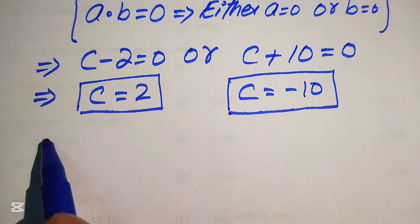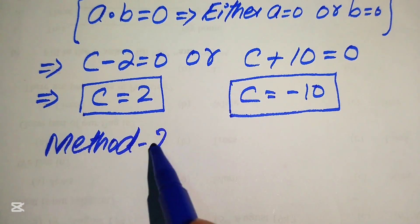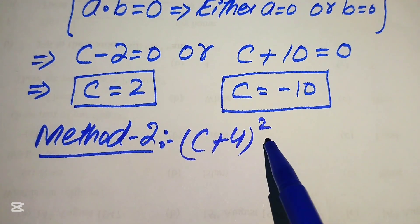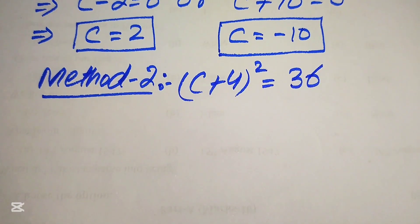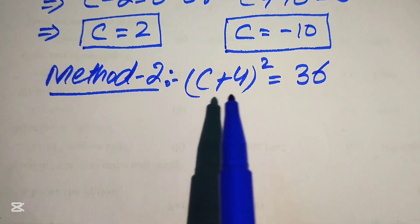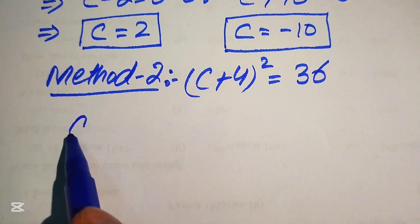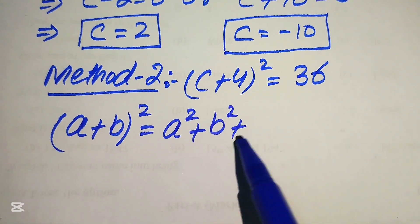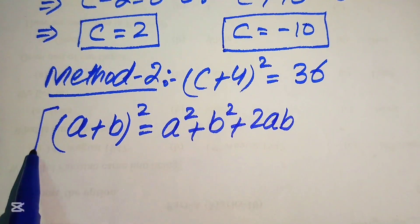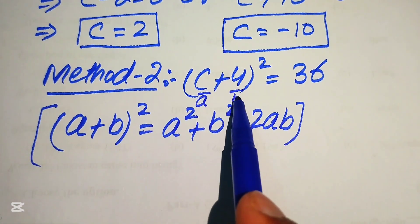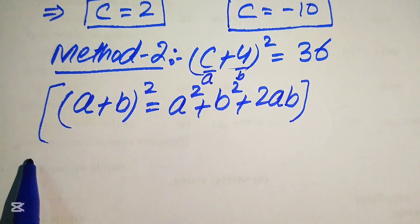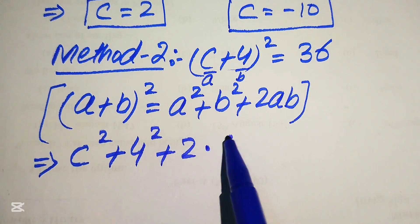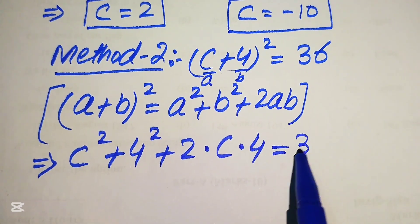Now we move to method two. We again start with the given equation: (c + 4) whole square equals 36. In this method we focus on the left hand side and expand (c + 4) whole square using the formula (a + b) whole square equals a square plus b square plus 2ab. Here our a is c and our b is 4.